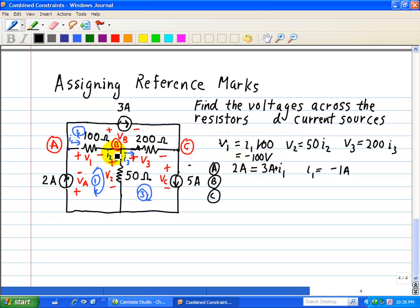Now at node B, we have the incoming current of I1, which we know is minus 1 amps, and our outgoing is I2 plus I3.